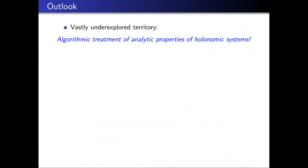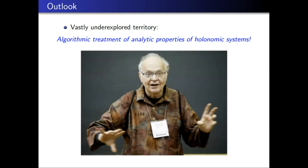The hypergeometric inequality problem similarly reduces to determining whether a period is zero. So what is the outlook? The theory of equality for holonomic functions and sequences is very well understood. What I believe is a vastly underexplored territory is the algorithmic treatment of the analytic properties — inequalities, asymptotics — of holonomic objects. In the spirit of Donald Knuth, what we want to do is move more of the art into the science. Thanks, I'll stop here.